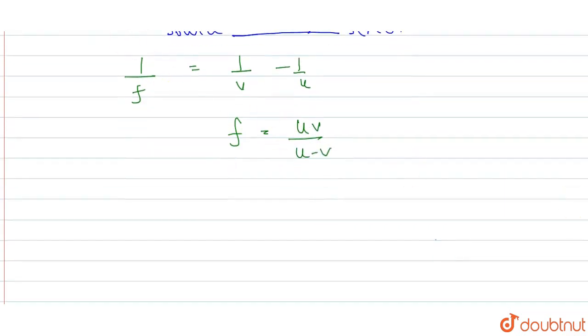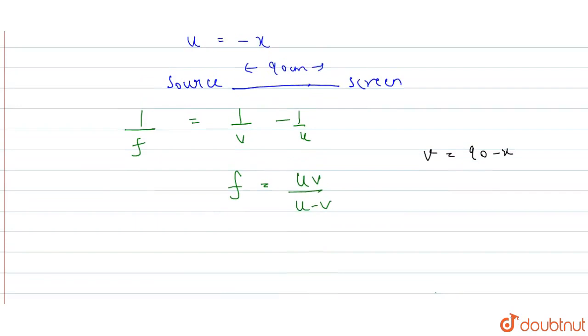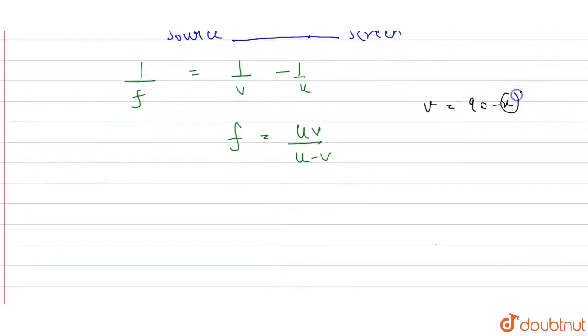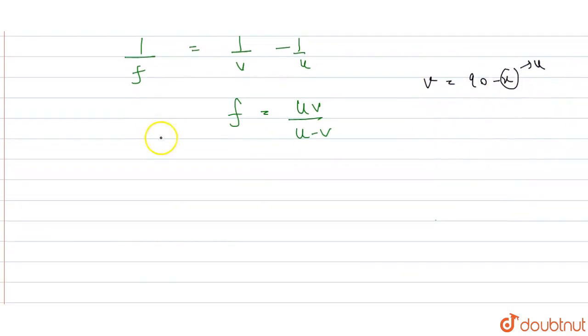Now if we put the values, how much will v be? v will be 90 minus x. So if we substitute the values, u is negative x, v is 90 minus x, and u minus v, how much will it be?